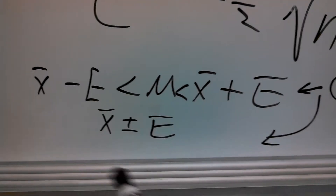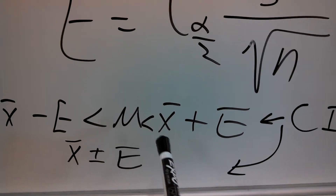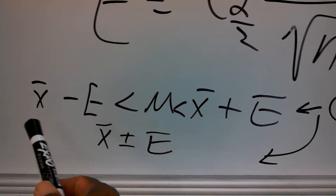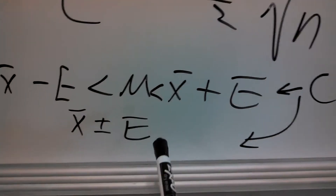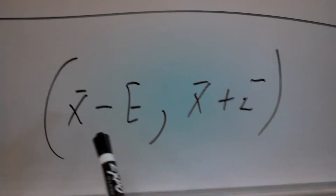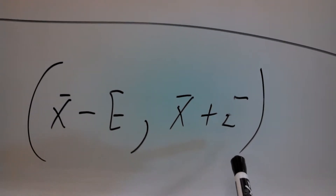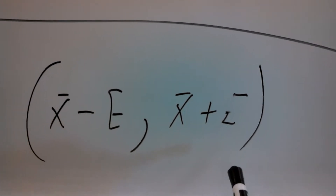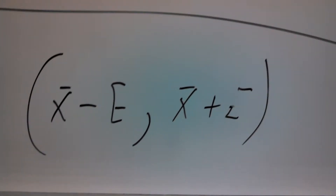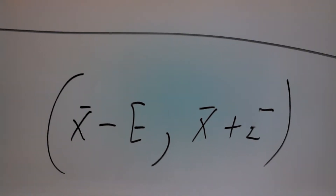The population mean would be between X-bar minus E and X-bar plus E. We can also express this as X-bar plus or minus E, or in interval notation as (X-bar minus E, X-bar plus E). In this course, you have to be able to express it in all three ways.